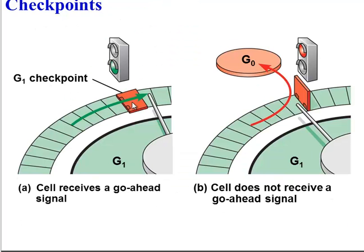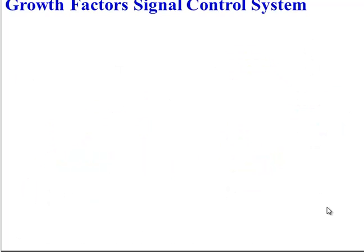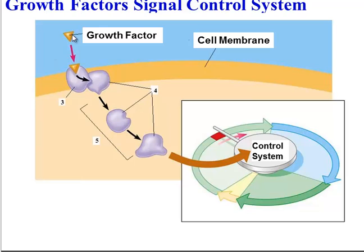Let's zoom in on these checkpoints. Here's the checkpoint at G1. If a cell receives a go-ahead signal — a green light — it will proceed to the next phase of the cell cycle, S. If it does not receive that signal — in other words, it gets a red light — it won't proceed to S phase. Instead, it will enter G0, a non-dividing or resting state. These signals are growth factors. Here's a small protein molecule, and when it's released by a cell and binds to another cell, there's a series of events that occur, but essentially it tells the cell cycle to proceed to the next checkpoint.